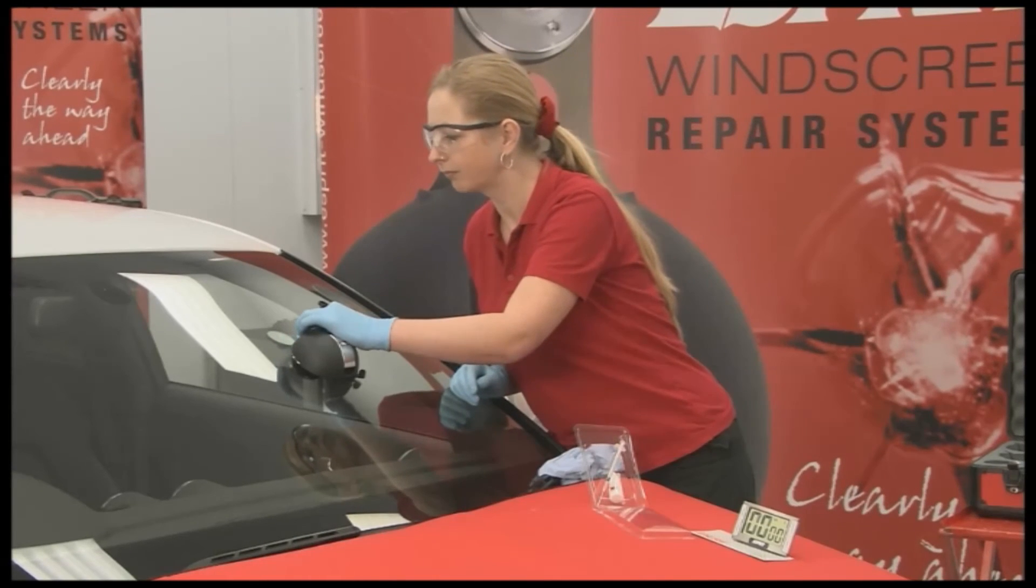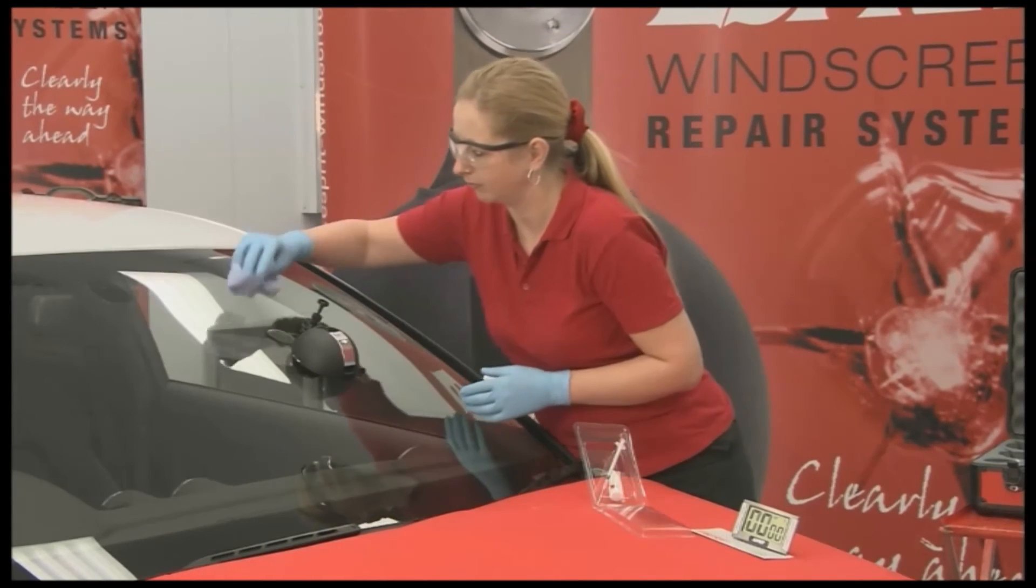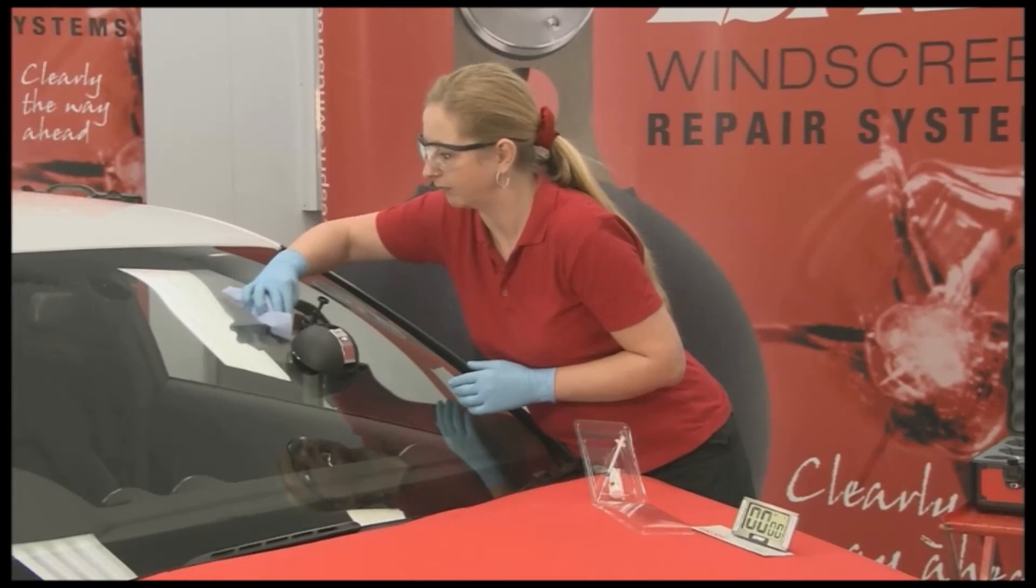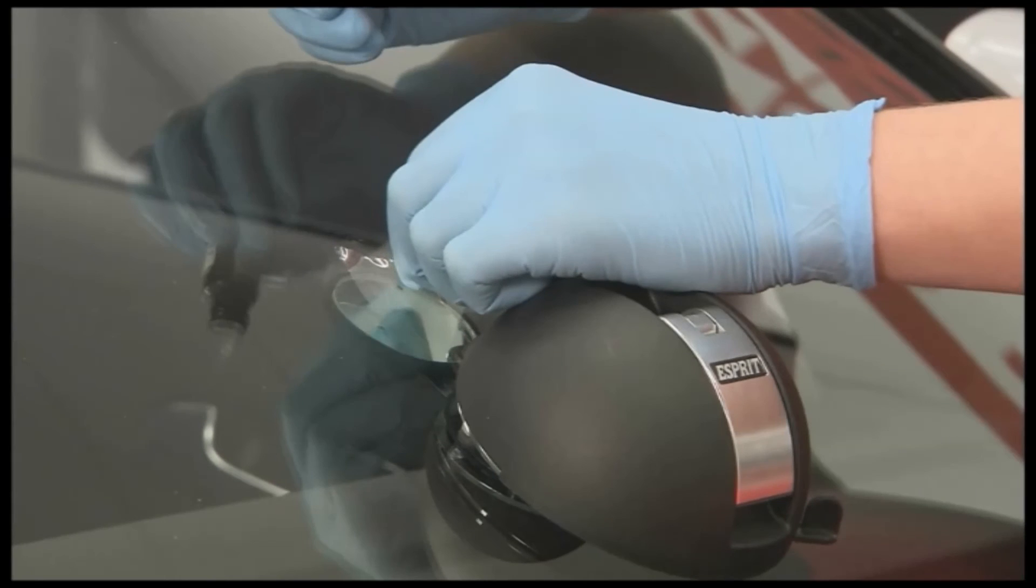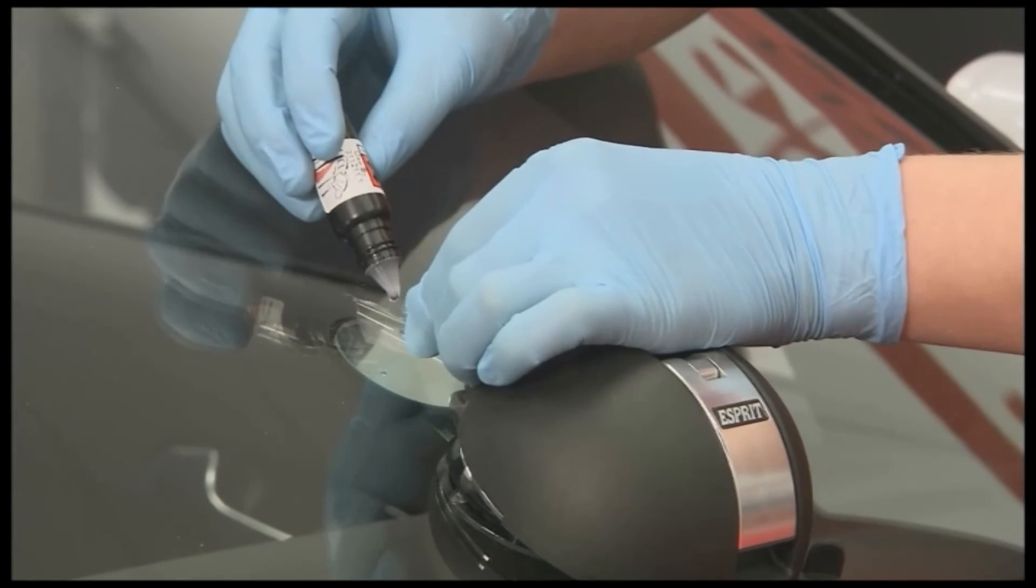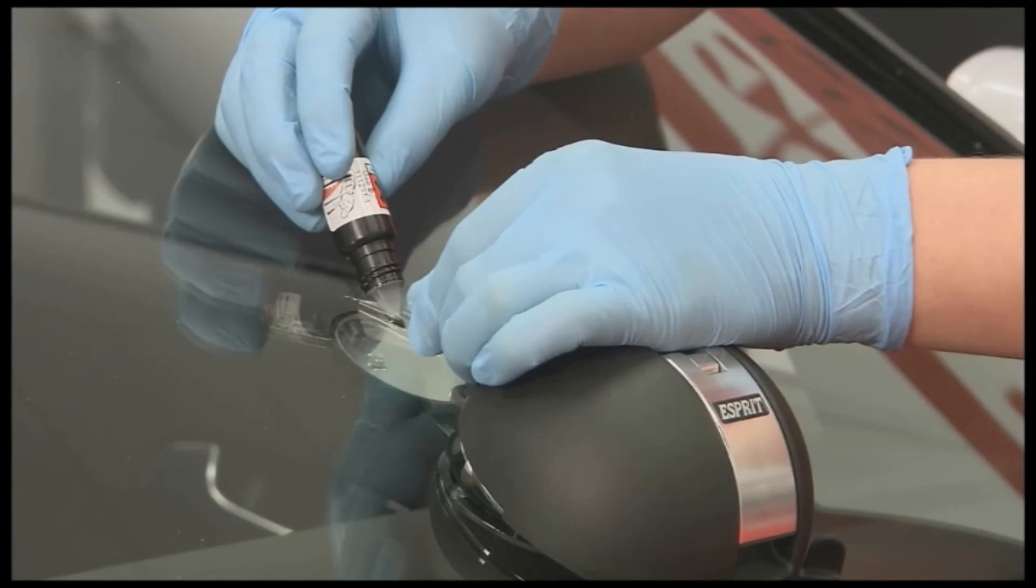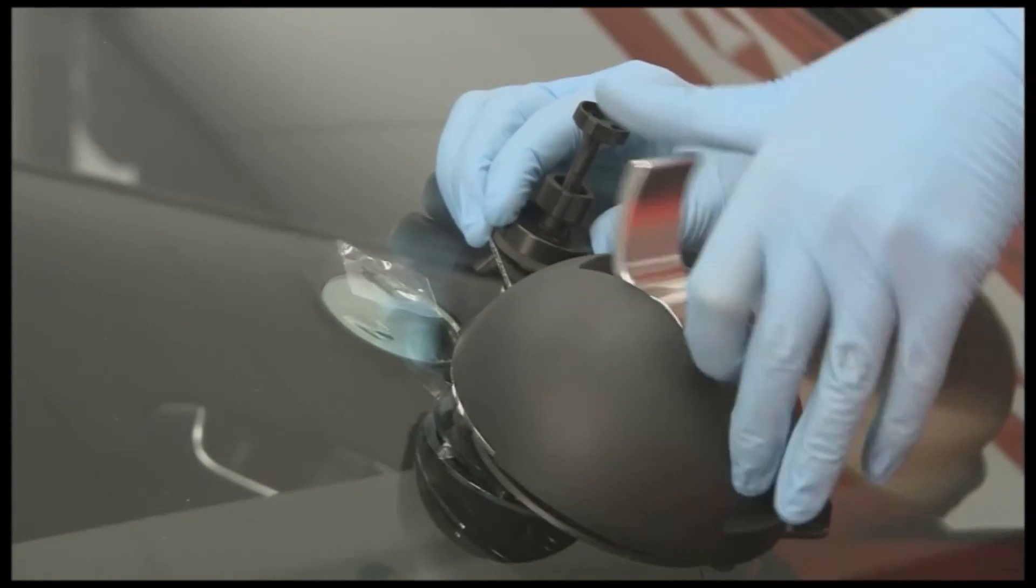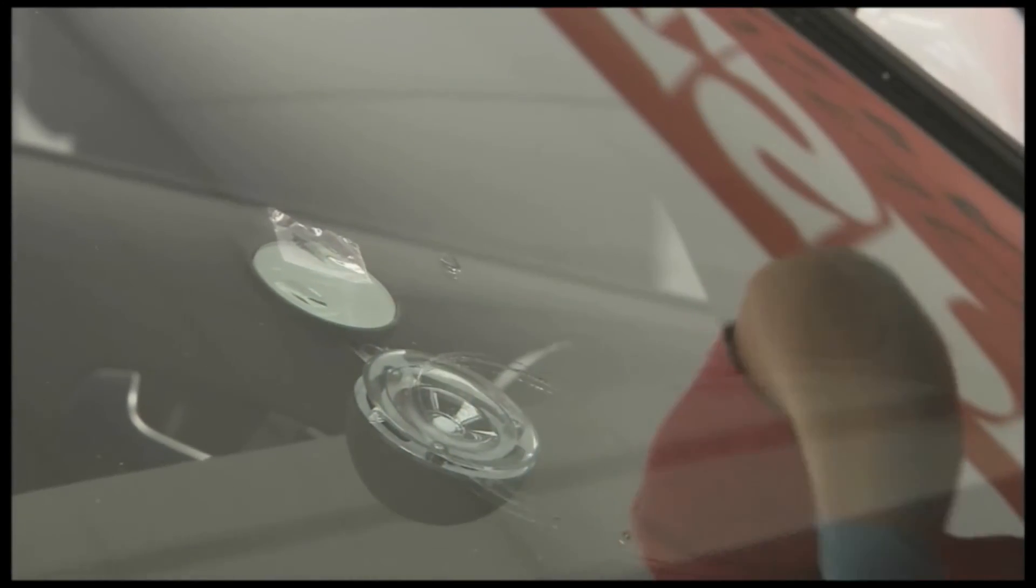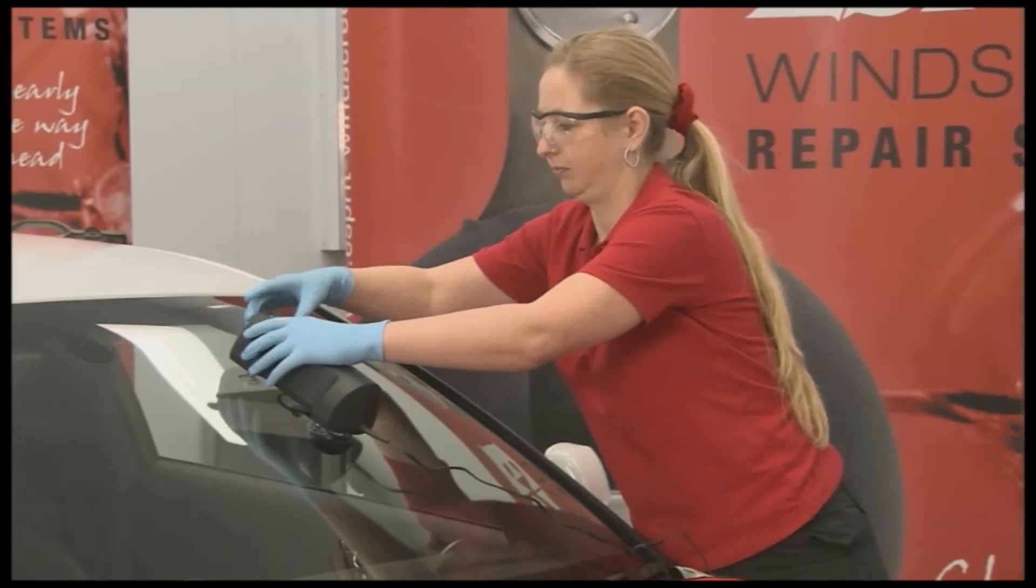To finish the repair, the arm is rotated to one side and any excess resin is wiped off. A drop of pit fill resin is applied to the remaining surface chip, covered with UV plastic sheet, and cured for five minutes with the UV lamp.